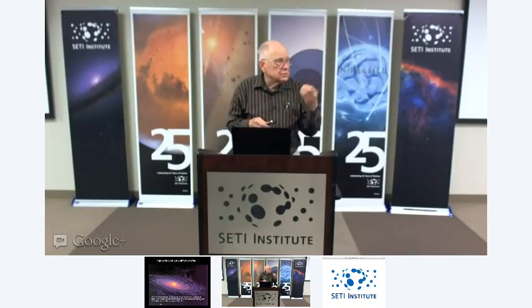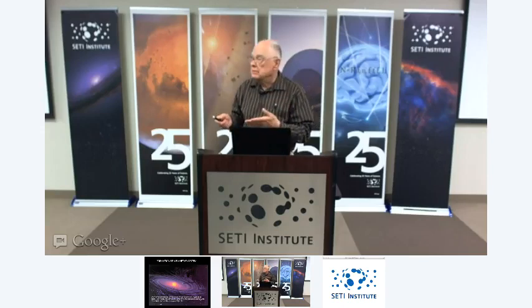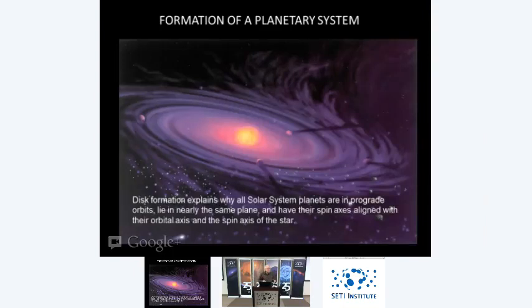If you're a planet close to the star, it's so hot that only refractory materials can condense — that explains Mercury, Venus, Earth, and Mars. Several AU out, it's colder and you can form the giant planets. They have large distances to sweep up material, become massive enough to attract hydrogen and helium, and form a giant planet. It's a great concept — it doesn't work all that well, but it's a great place to start.